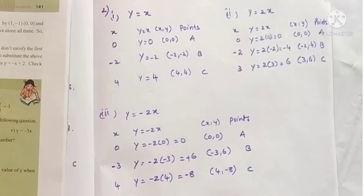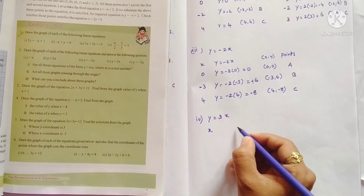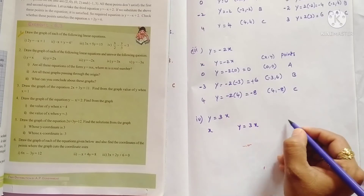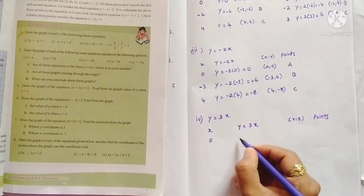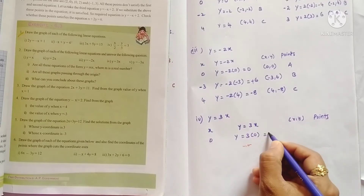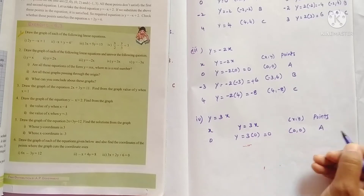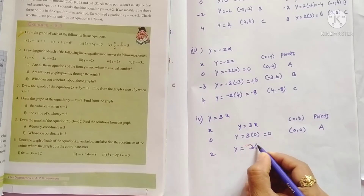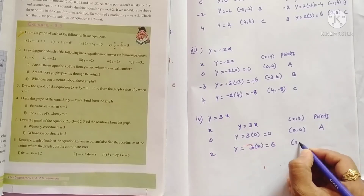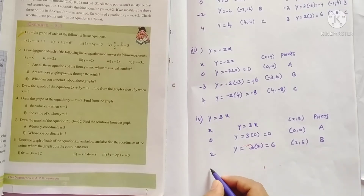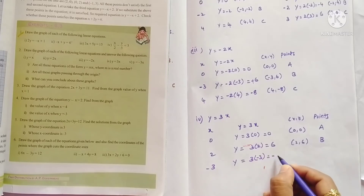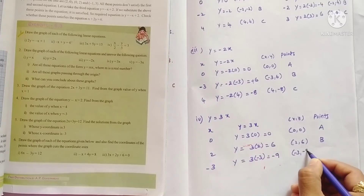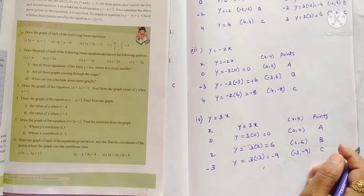For the fourth equation, y = 3x: if x = 0, y = 3×0 = 0, giving point (0, 0). If x = 2, y = 3×2 = 6, giving point B (2, 6). If x = -3, y = 3×(-3) = -9, giving point C (-3, -9).